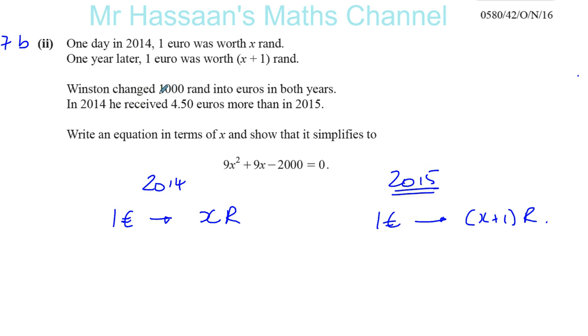Winston changed 1,000 rand into euros in both years. In 2014, he received 4.5 euros more than in 2015. Okay, so in both years, he changed 1,000 rand. So what I'm going to do now is I'm going to make a bit of space here. I'll move these things up there a bit.